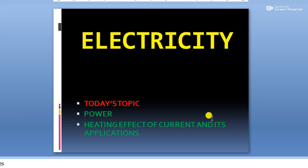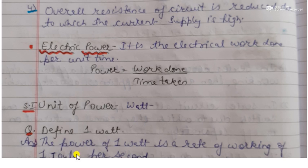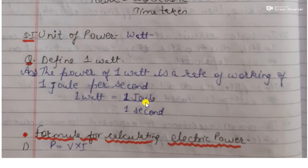So let's start our class. Electric power is the electrical work done per unit time. Power is equal to work done divided by time taken. The SI unit of power is watt. One watt of power means when one joule of work is done per second.